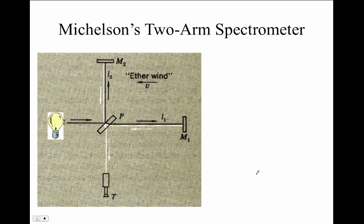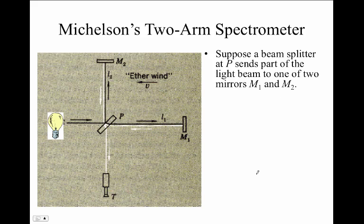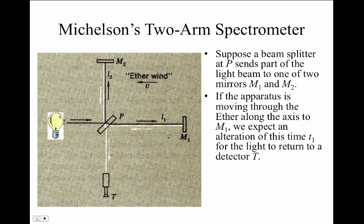Michelson designed a two-arm spectrometer. In this spectrometer, a beam splitter takes the light from a source and splits it off into two different tracks. One track heads toward mirror M1. The other track, which is reflected from the beam splitter in the opposite direction, heads toward a mirror M2. If the entire apparatus is moving through the ether along the axis parallel to M1, then the ether wind looks like a velocity heading at speed V.